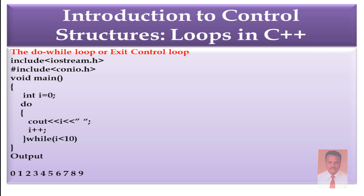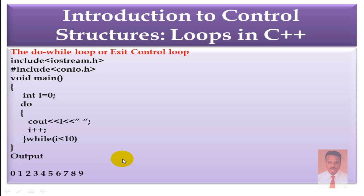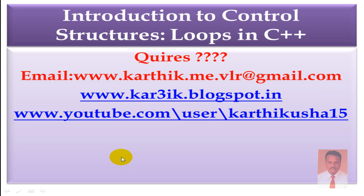Now we will see an example for do while. We have #include iostream.h, #include conio.h, void main. Integer i = 0. In the do block, we print the i value with cout << i, then increment i with i++. While i < 10. First it prints the i value and then checks the condition. I think you guys have enjoyed this video. Thanks for watching. Thank you.